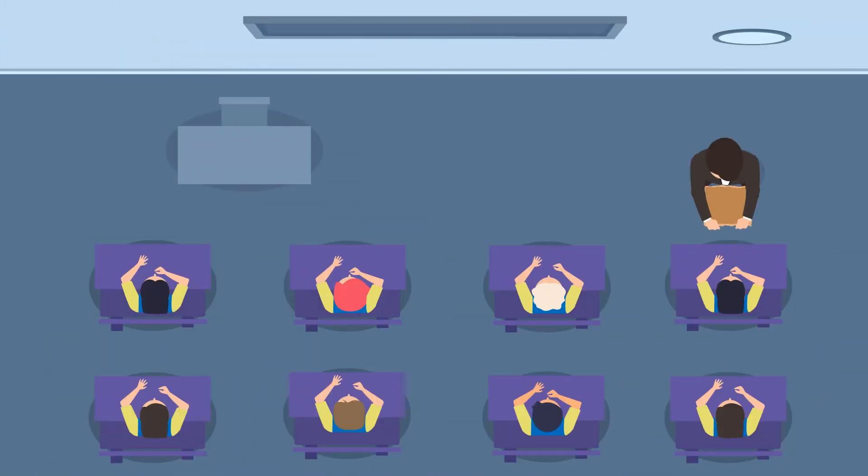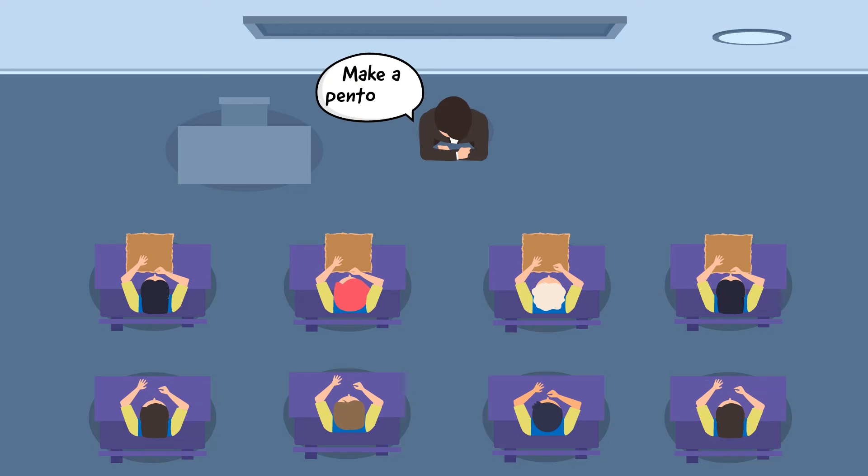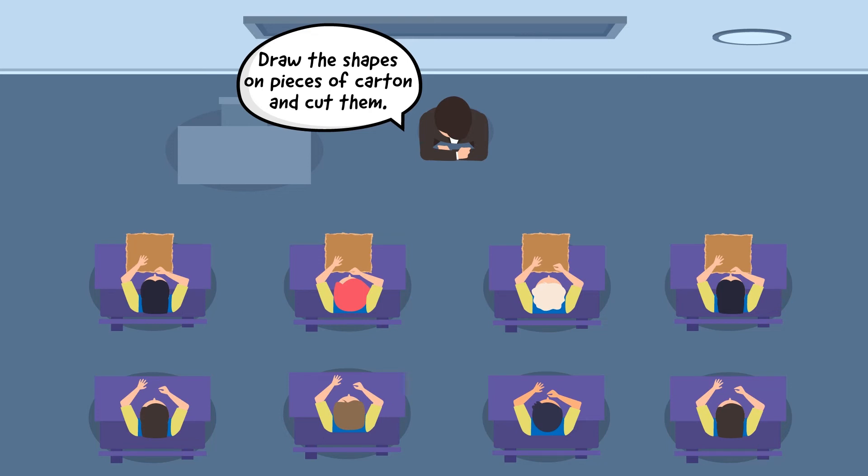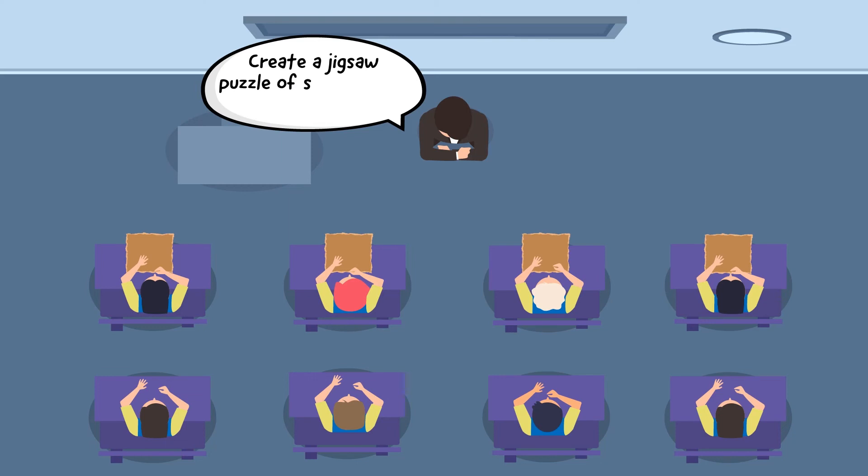Initiate another activity by distributing some carton pieces to the students to create a puzzle. Instruct the students to make a pentomino. Ask the students to draw the shapes on pieces of carton and cut them. Ask them to create a jigsaw puzzle of shapes made of 5 squares each.